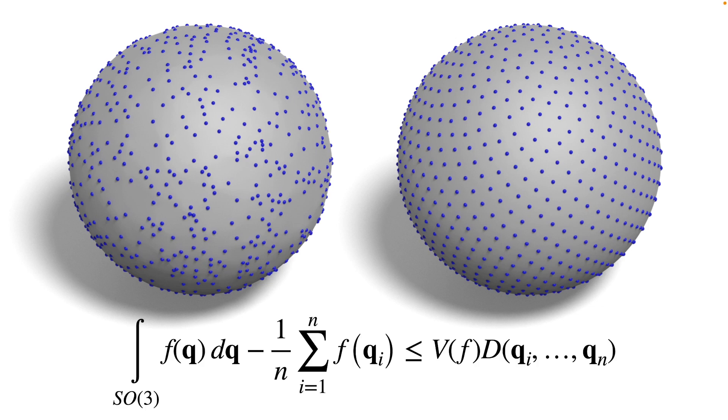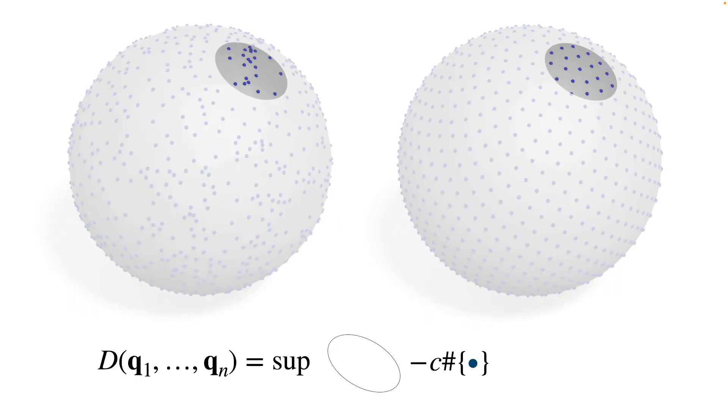In fact, the quality of the estimation depends directly on the so-called discrepancy. Loosely speaking, the discrepancy of a point set is the worst-case error we make when we estimate the area or volume of an arbitrary spherical region by simply counting the samples.